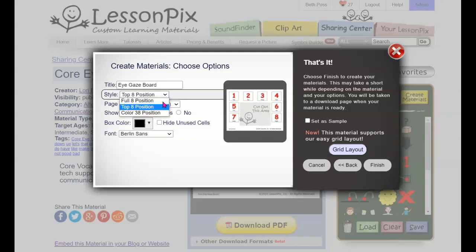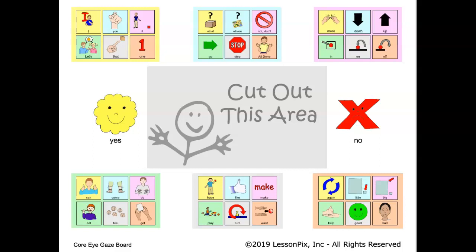And a color 38 position, which offers 38 pictures in two groups of six for a two-step board. The 38 position frame allows for more vocabulary, such as all of the core words from Project Core, or for a speller to have access to all of the letters of the alphabet and additional high frequency phrases.